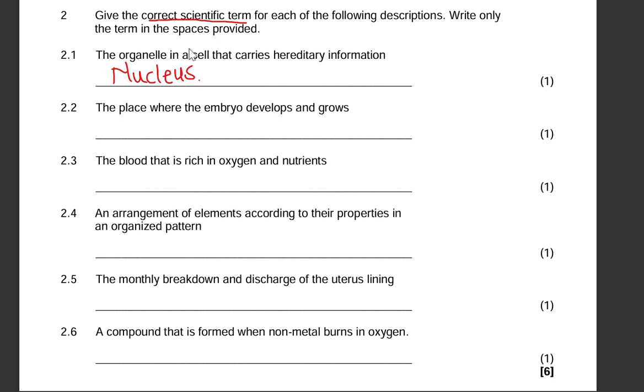So, 2.1: the organelle in a cell that carries hereditary information, that carries DNA, that is the nucleus. 2.2: the place where the embryo develops and grows in the female reproductive system, that is the uterus. So the baby does not grow in the stomach, it grows in the uterus. Womb would also be correct, but I think the most correct terminology is uterus. 2.3: the blood that is rich in oxygen and nutrients, that is oxygenated blood.